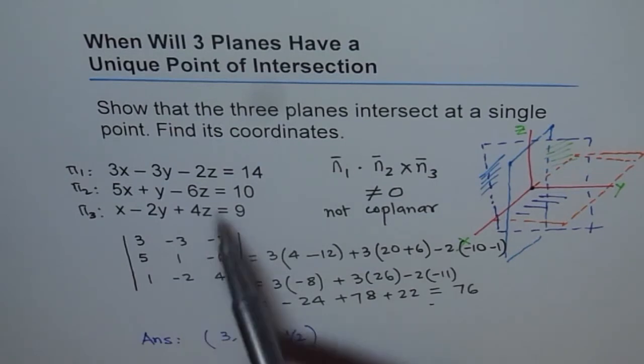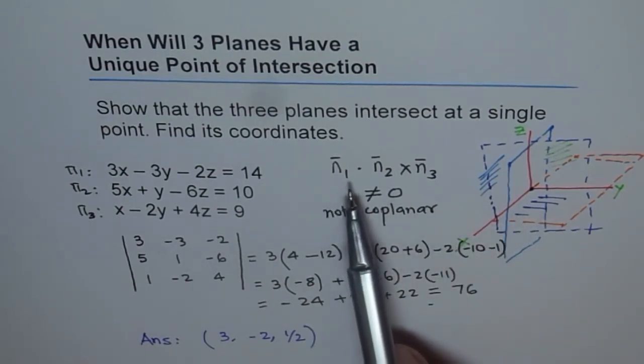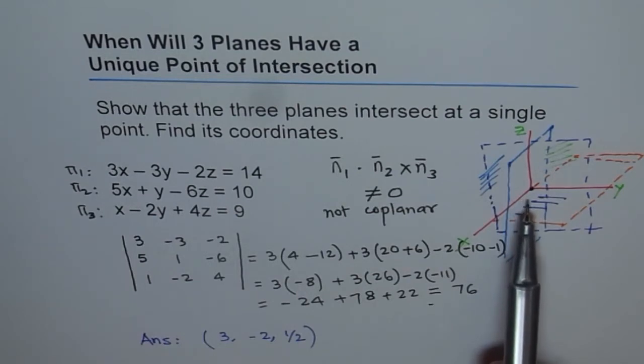Employ your method, you can use matrix, or you can use the linear equations to solve for it. So the idea here was to inform you, or to educate you about the condition, which is n1 dot n2 cross n3 will not be equal to 0 if they intersect at a point, because the normals are not coplanar. Thank you.